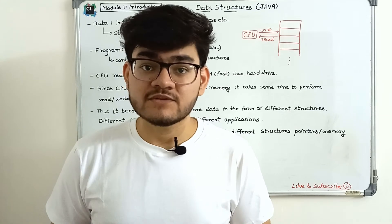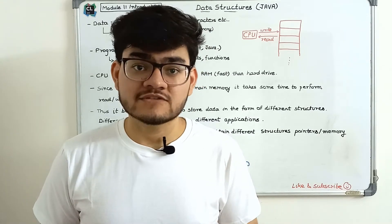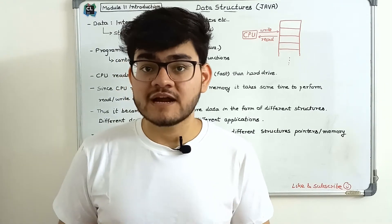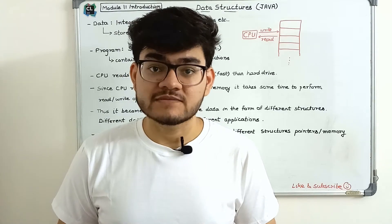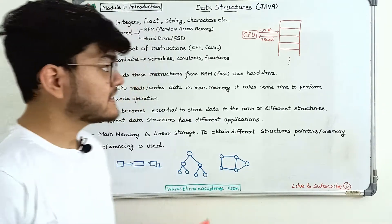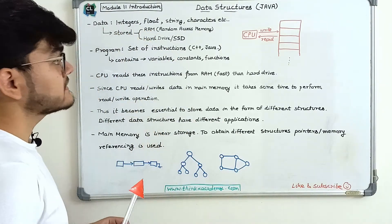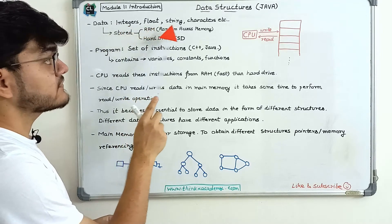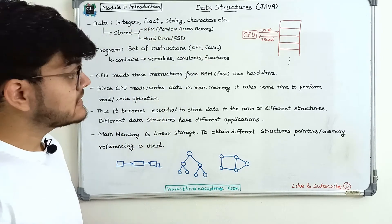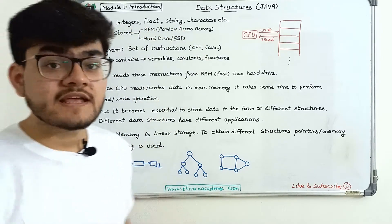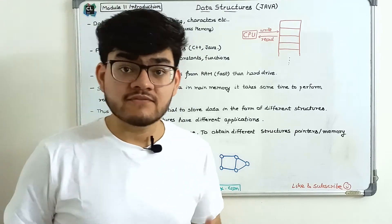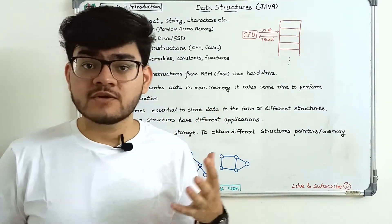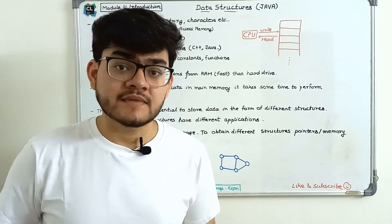Let's start with the very first things: what are data structures, and we need to understand all the terms and terminologies. The first thing is what is data. Data includes integers, float, string, and characters. Basically every computer, every server, every web application and program deals with data.